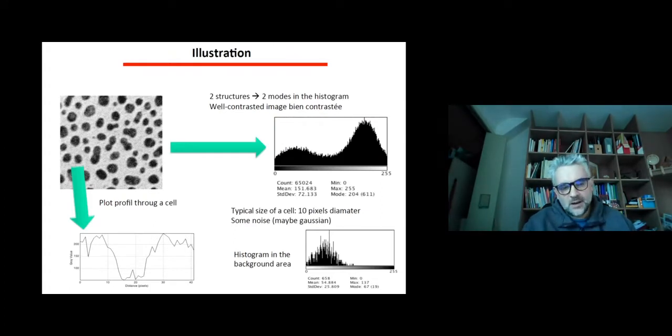As a last example, imagine we have this image and we want to count the number of cells. We'll first make a profile to see how strong the contrast is. We move from 200 in the background to something like 10 in the cell, so there's strong contrast. If we do a global histogram, we see we have two modes, so the image is well contrasted. The typical size of a cell is about 10 pixels in diameter. There's also some noise that appears Gaussian and symmetrically distributed, so averaging would be a good option.